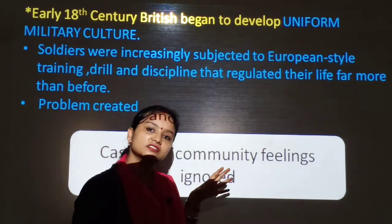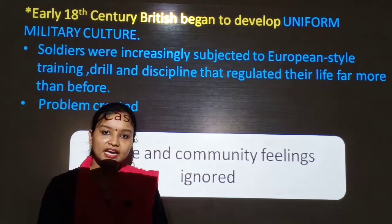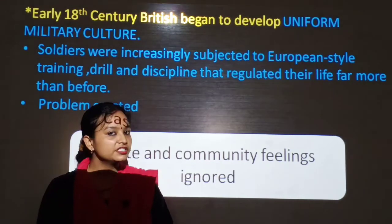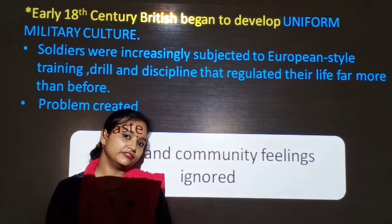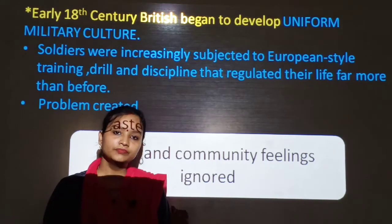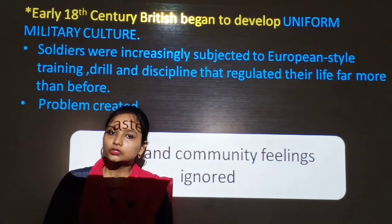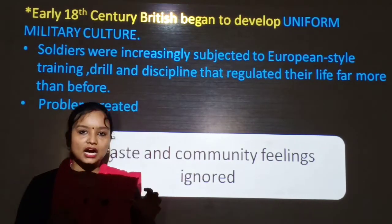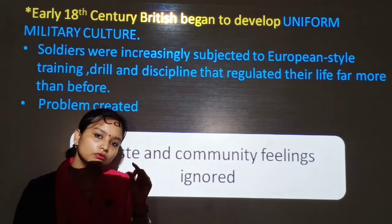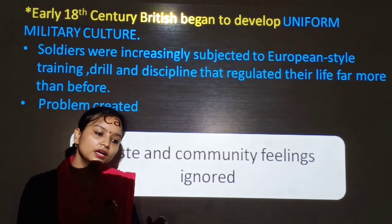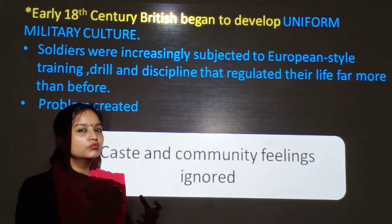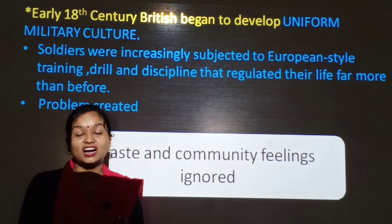However, problems arose when caste and community feelings were ignored. For example, the British East India Company introduced an Enfield rifle — which became the main cause of the 1857 revolt. In the Enfield rifle, the cartridge had to be opened by the mouth. This cartridge was reported to be greased with the fat of cows and pigs, which deeply offended both Hindu and Muslim soldiers.